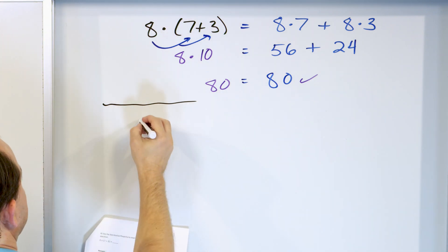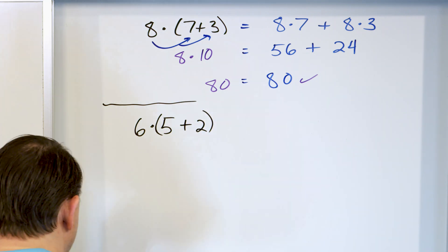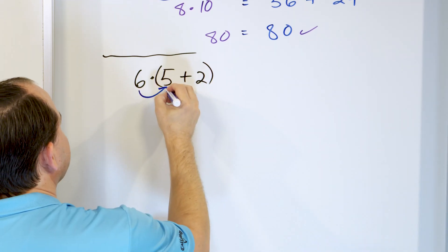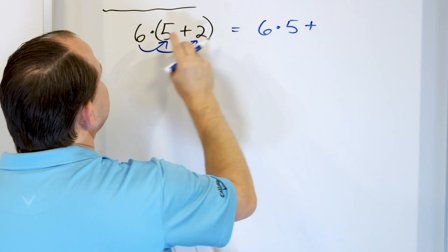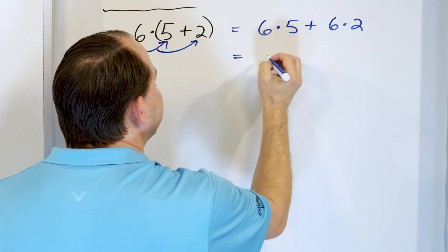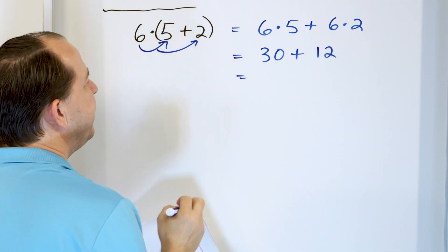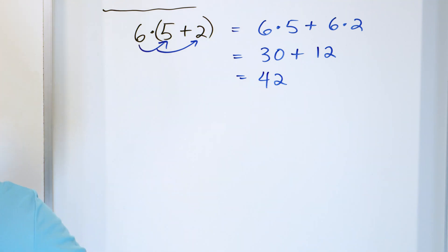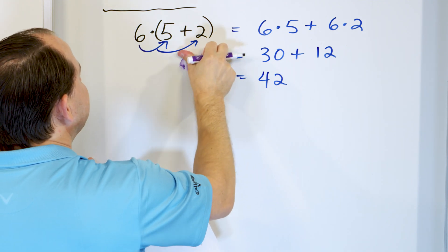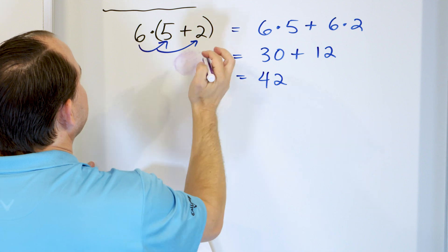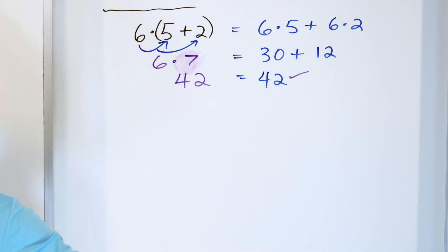Next: 6 times (5 plus 2). We distribute in and get 6 times 5, plus 6 times 2. 6 times 5 is 30, and 6 times 2 is 12, so 30 plus 12 is 42. Checking the left: 5 plus 2 is 7 — not 10, my mistake — and 7 times 6 is 42, which is exactly correct.